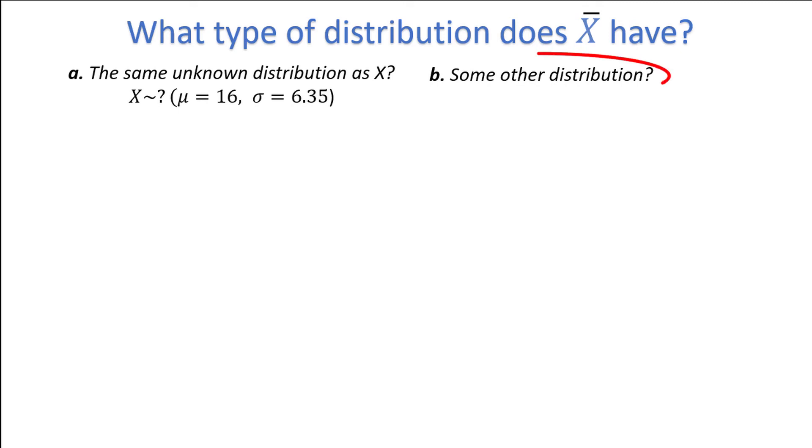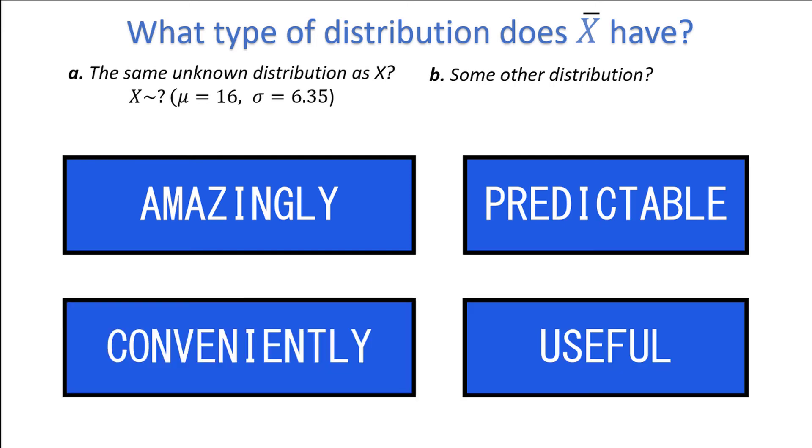If you answered b, you are correct! In fact, the sampling distribution of X-bar does not have the same distribution as X. Taking averages happens to change the initial distribution in an amazingly predictable and conveniently useful way.